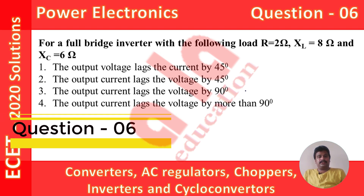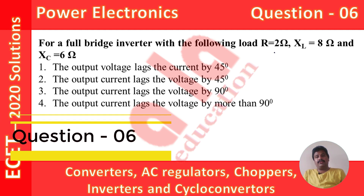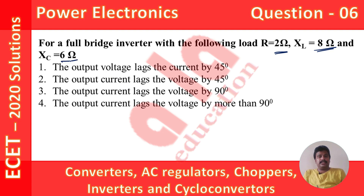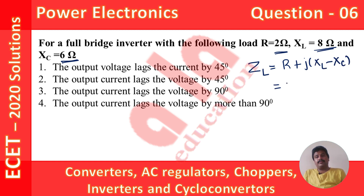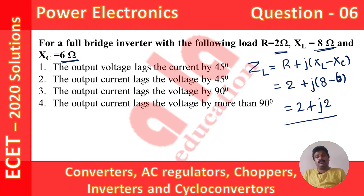Now let us see question number 6. For a full bridge inverter with the following load: R = 2 ohm, XL = 8 ohm, and XC = 6 ohm, we are asked to find the relation between output voltage and output current. First we find the load impedance: ZL = R + j(XL − XC) = 2 + j(8 − 6) = 2 + j2. Since the imaginary part is positive, inductive reactance is dominant, so the load behaves like a series RL circuit. In a series RL circuit, the current lags behind the applied voltage.